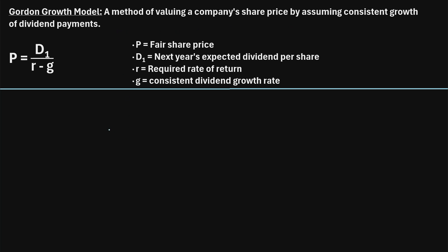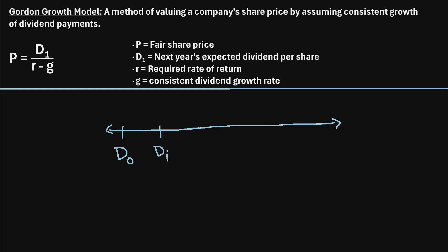Here's the idea with this model. Let's say that a company is about to pay a dividend tomorrow. Let's call that dividend zero in year zero — the current dividend. One year from now, they're going to pay another dividend. Let's call that D sub one.